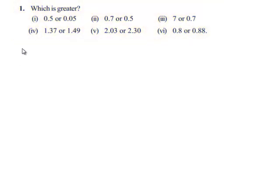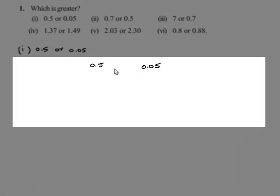Take down the first one, that is 0.5 or 0.05. Consider 0.5 and 0.05. First we should compare the digits which are on the left side of the decimal, and then we have to go further to the digits which are on the right side of the decimal.